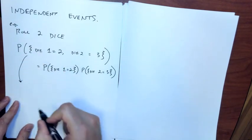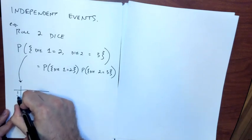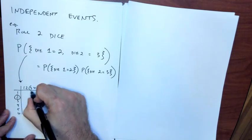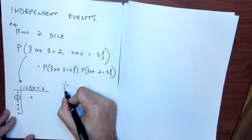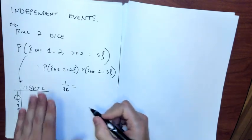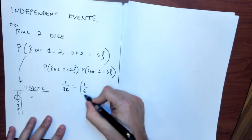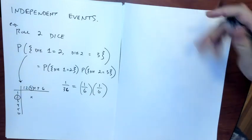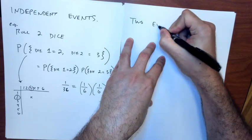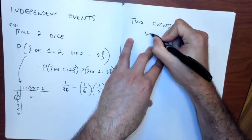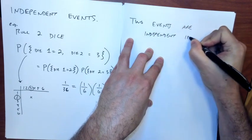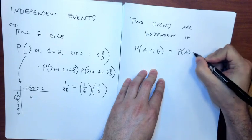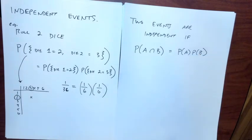The overall probability of getting two on the first roll and three on the second is one out of 36 possibilities. That turns out to be the same as the probability of getting two on the first roll times the probability of getting three on the second roll. This is the definition: two events are independent if the probability of A intersect B equals the probability of A times the probability of B.